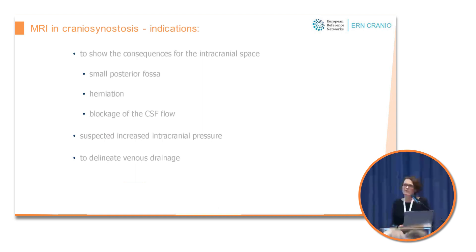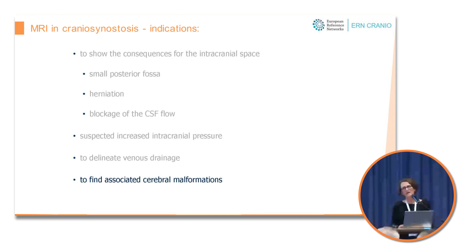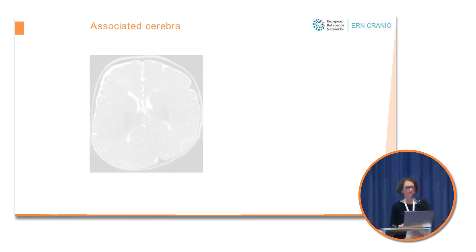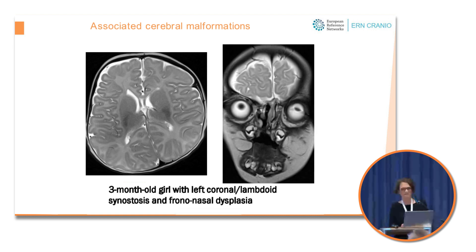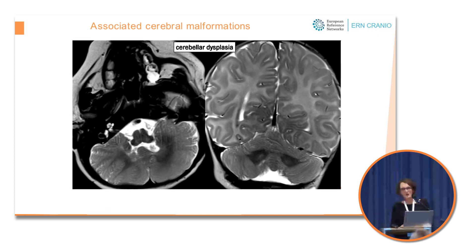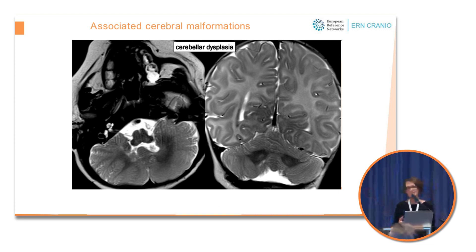Finally, we have to find potential associated cerebral malformations, though I must say I don't see them very often, although they are regularly described in the radiology literature. Here is a girl with left-sided synostosis and a frontonasal dysplasia who has an associated cerebellar malformation or dysplasia. You can see it on the left side of the cerebellum with abnormal fissuration and foliation, as well as abnormal white matter arborization.